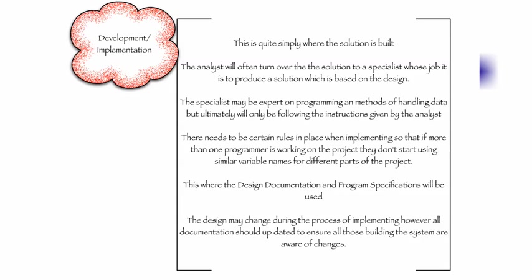The design may change during the process of implementing. However, all documentation should be updated to ensure all those building the system are aware of changes. If we do make changes as we're going through, that can happen, but you have to make sure all documentation is updated. There has to be some sort of consultation that would occur if changes did occur during the development stage. This is sometimes called implementation as well, depending on who you talk to.